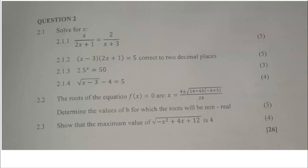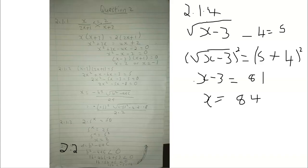Question 2 was also about algebra — solving for x and nature of roots. For 2.1.1, it involved cross multiplication. Once I did cross multiplication and simplified, I ended up with the trinomial x squared minus x minus 2. From there I factorised and got two solutions.